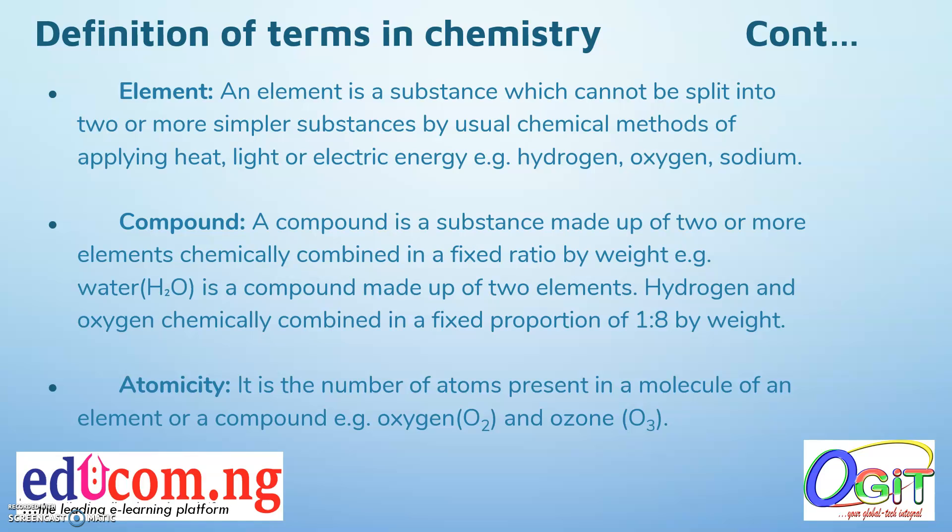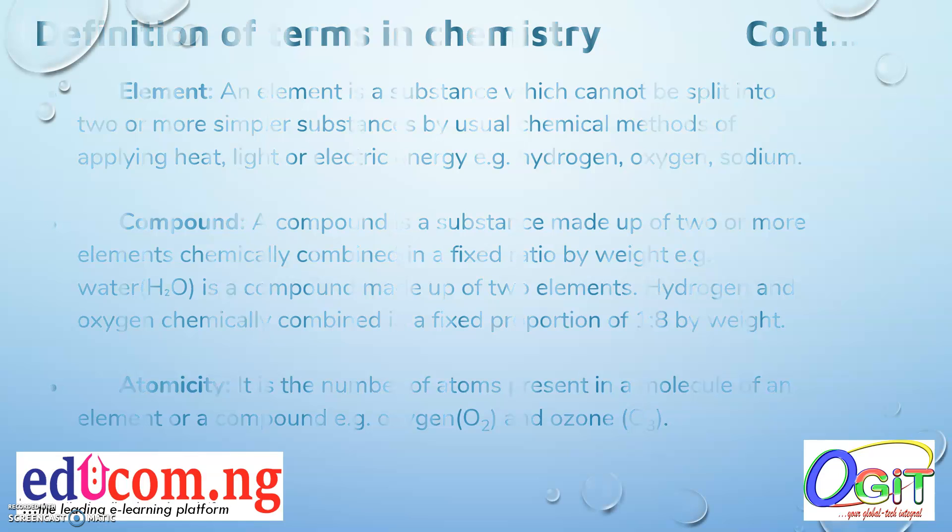Note that for a molecule, the atoms must be of the same type, but for a compound, it must be made of different element atoms combined together. Atomicity is the number of atoms present in a molecule of an element or compound. For example, oxygen (O2) contains two atoms and ozone (O3) contains three atoms. Water is an example of a compound.